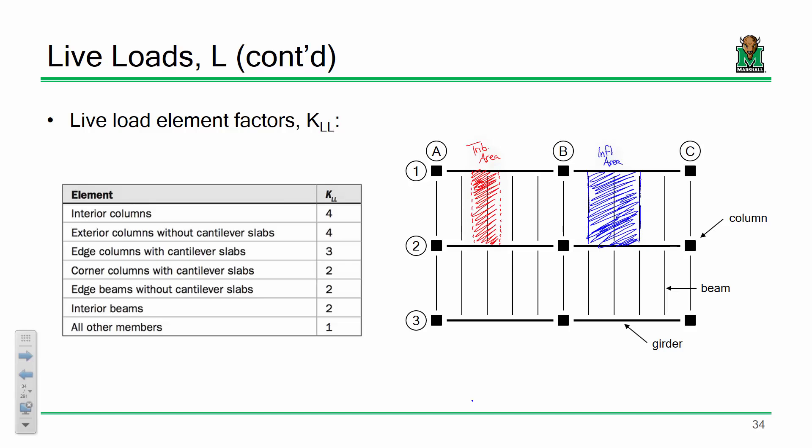For a column — say column B2 — the tributary area is halfway over in all directions, and the influence area extends from A to C and from 1 to 3 (the full surrounding frame). The ratio between influence area and tributary area is 4 — that's why KLL is 4 for columns. So: columns KLL = 4, beams KLL = 2. The KLL factor comes from instrumented structures showing a trend between influence area and live load reduction.